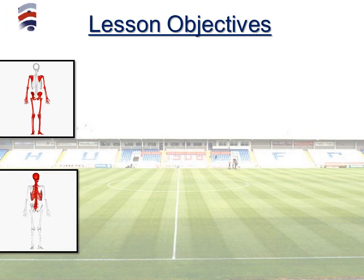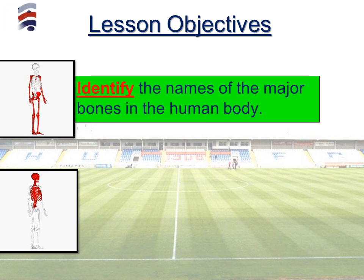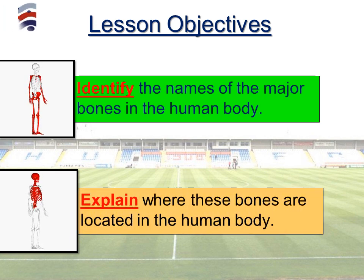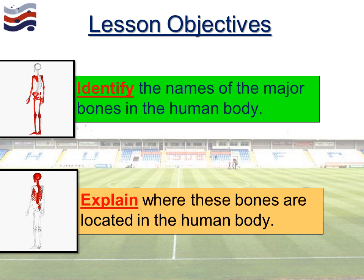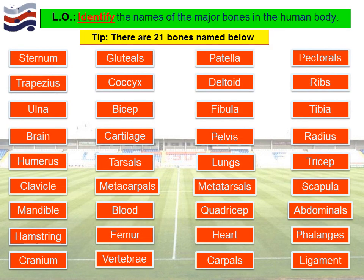This lesson is hopefully going to allow us to achieve two things. The first is being able to identify the names of the major bones of the human body, and secondly we're going to try and explain where these are located. So our first task is to identify the names of the major bones, and this is where you'll need your pen and paper.